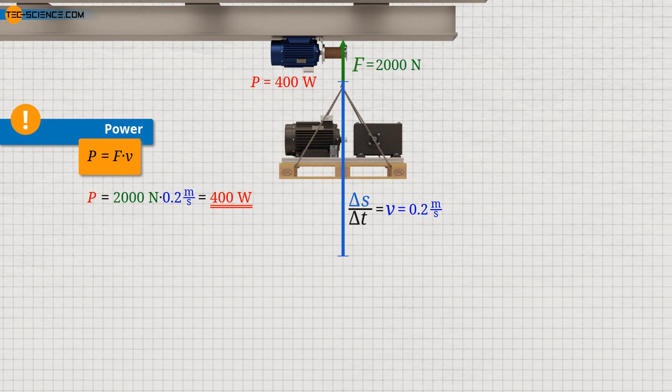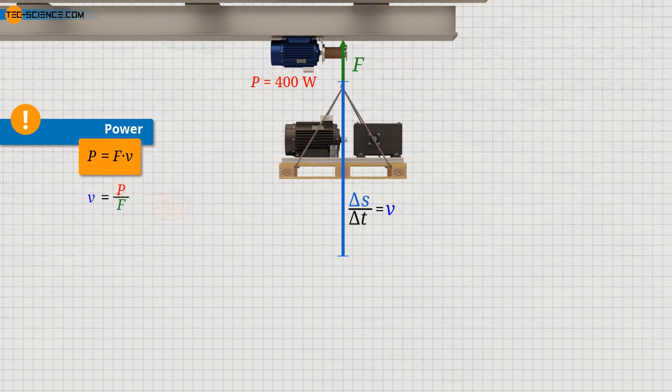With a force of 2000 newtons and a lifting speed of 0.2 meters per second, we get a power of 400 watts to be transferred to the load. If friction of the rotating winch is neglected, this corresponds to the required motor power. If a greater load is to be lifted at the same lifting speed, more motor power is required. However, motors cannot provide unlimited power — if only a certain motor power is available, a higher force can only be achieved at the expense of speed. A heavier load can therefore only be lifted with greater force if the speed is reduced accordingly.